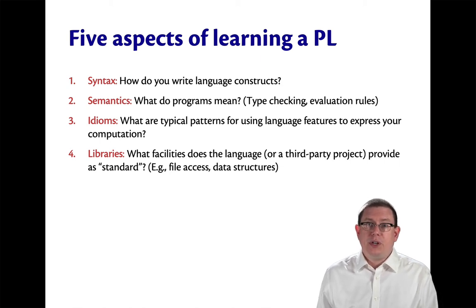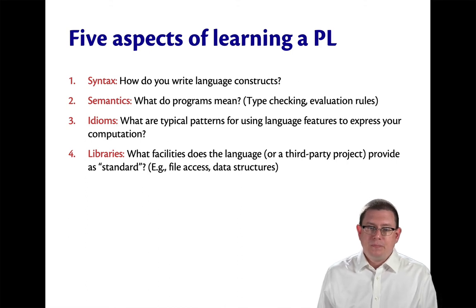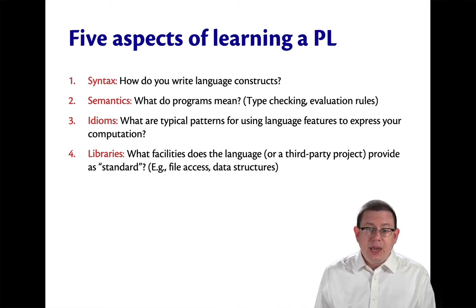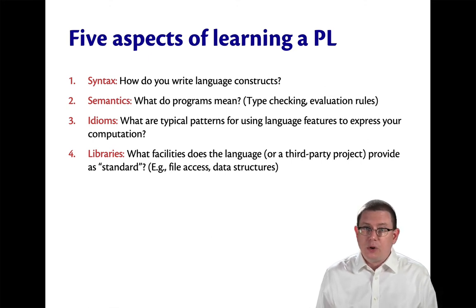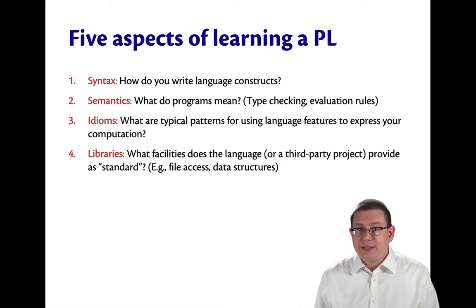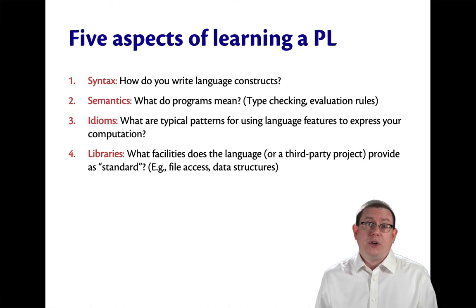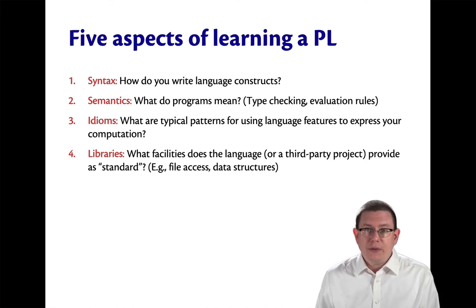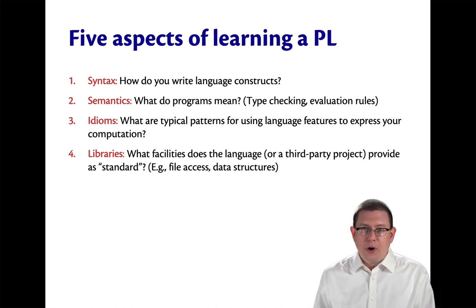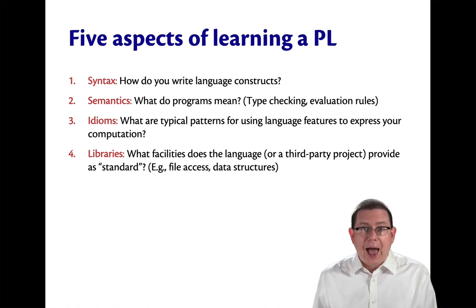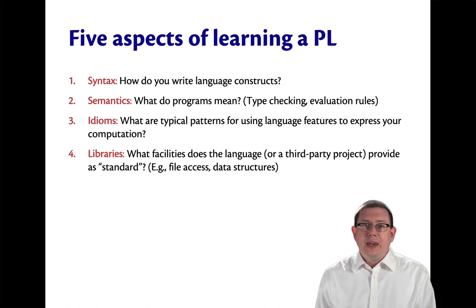A fourth piece of learning a programming language is learning the libraries that are available — what facilities the language gives you, or maybe third-party projects give you, that are standard or that you can download to make use of. Things like accessing the file system, data structures that have been provided for you. In Java, you probably learned to use libraries for hash maps, for example. In OCaml, you'll also need to learn to use certain libraries.